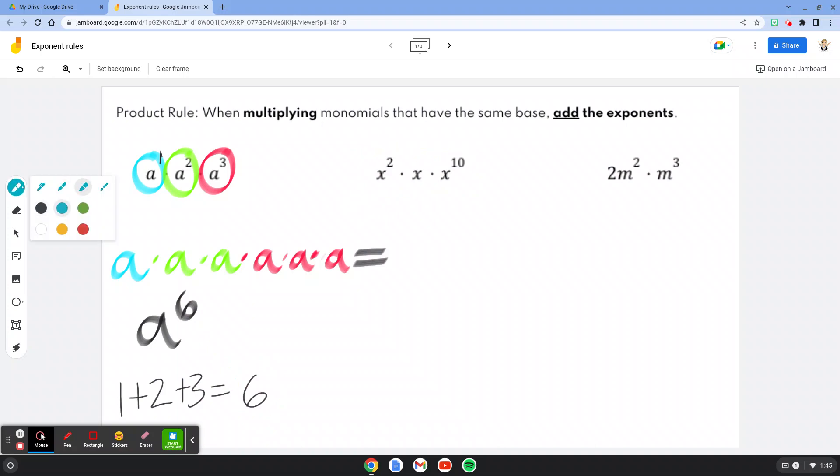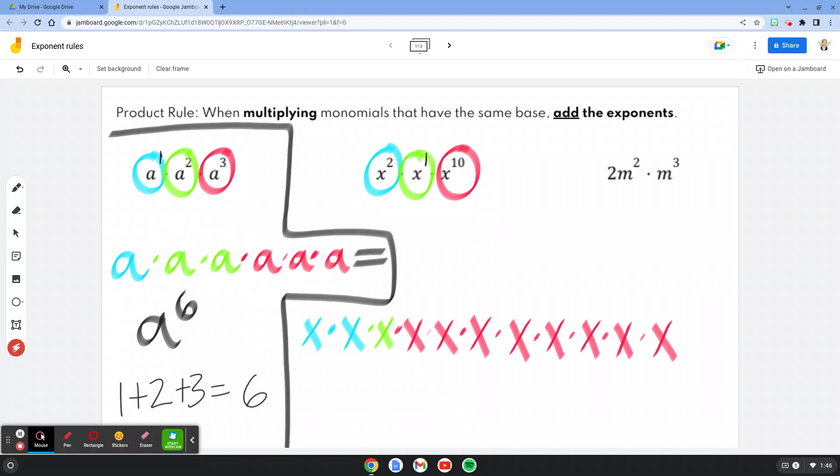So I'm going to do the same thing that I did in the first one. We've got x squared, x, and x to the tenth power. I'm going to go ahead and put a little one above this x, since that's what the exponent is. And then I'm going to write the x's out just like I did with the a's right here.